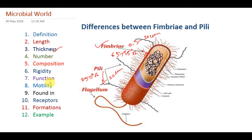Regarding rigidity, fimbriae is less rigid than pili. Now, coming to their functions: pili is responsible for two main functions — first, gene transfer, meaning it can transfer genetic material from one cell to another during conjugation; and second, attachment, and it can also perform motility. On the other hand, fimbriae is responsible for cell surface attachment — it is a specialized structure for attachment. If any bacteria needs to adhere to other bacterial surfaces, they use fimbriae to adhere.